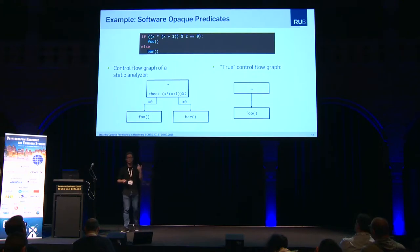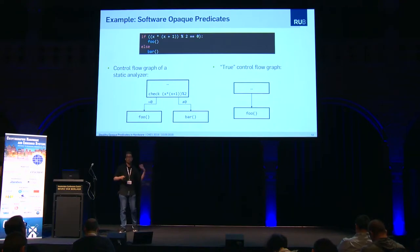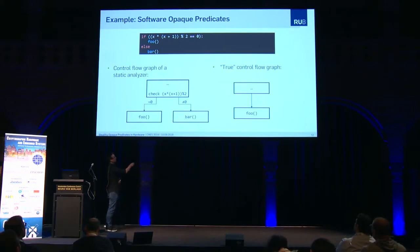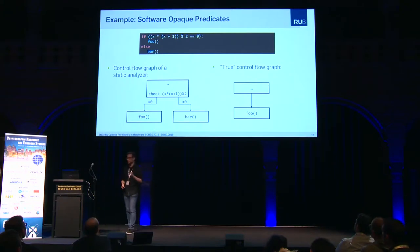So let's take a deeper look into this example. If I use this expression as an if condition and branch to foo or bar, then a static analyzer cannot detect that this is always true and will output a control flow graph like this. However, the true control flow graph should look like this: we always take the true branch and go to foo.